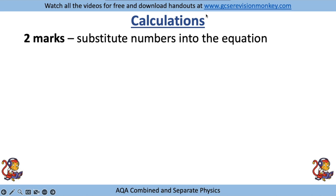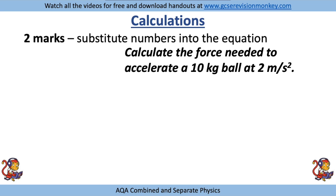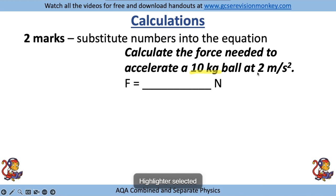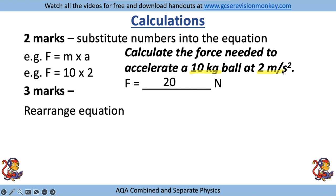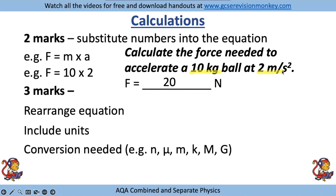For a 2-mark calculation, you substitute the numbers into the equation. For a question such as 'calculate the force needed to accelerate a 10 kilogram ball at 2 metres per second squared', you'd write down the equation, put the numbers in, and work out the answer on a calculator. For 3 marks, that involves something extra — such as rearranging the equation, including units, converting a number (e.g. nano, micro, milli, kilo, mega or giga prefixes), or significant figures. Occasionally a 2-marker may also require rearranging.